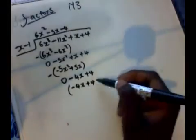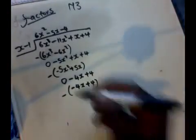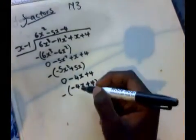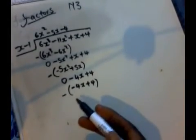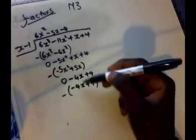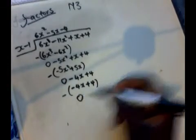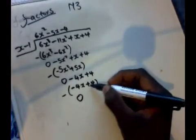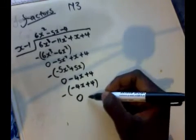Don't forget to introduce the negative every time. Negative times negative gives us positive — these are like terms, so they cancel to give 0. Then negative 4 and positive 4 also give us zero, so the remainder is zero.